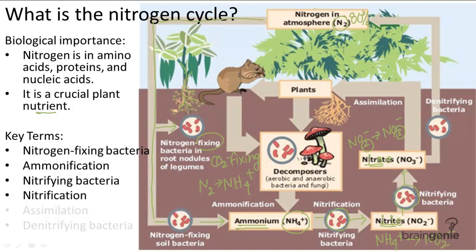This actually works for ammonium too. Ammonium has four different vowels — a, o, i, and u — so it has a 4 in its chemical formula, NH4+. And if you need to remember the order of nitrites and nitrates, remember that 2 always comes before 3, so nitrites always come before nitrates.